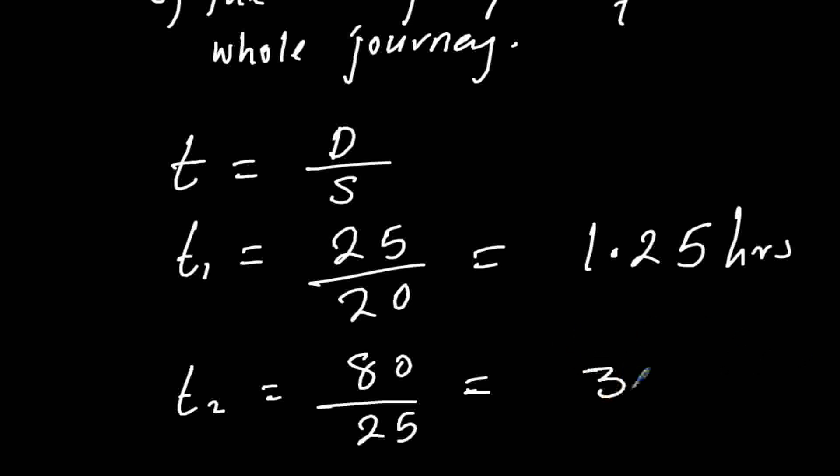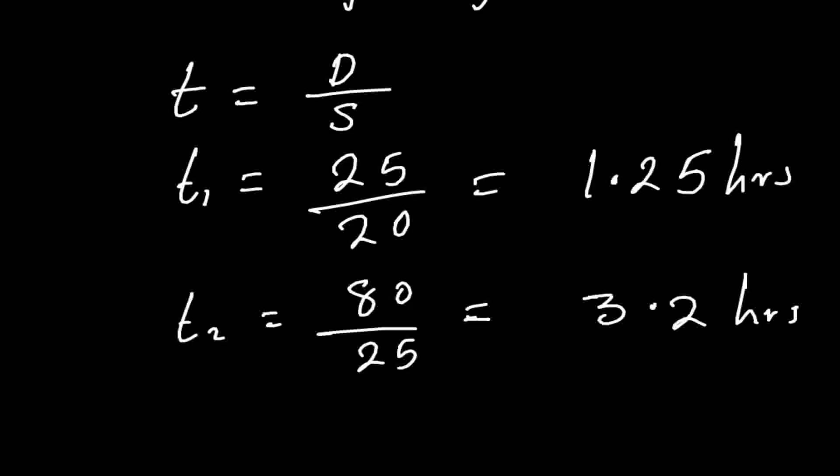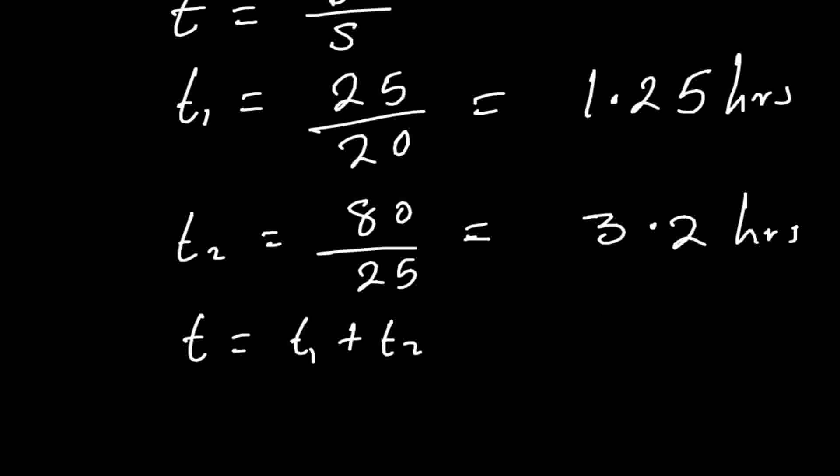So the total time taken for the whole journey, that will be t equals to t1 plus t2. So our t1 is 1.25 plus t2 which is 3.2, so our final answer will be 4.45 hours. That is part a.